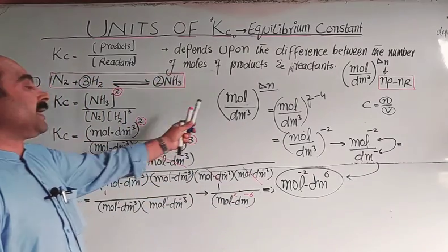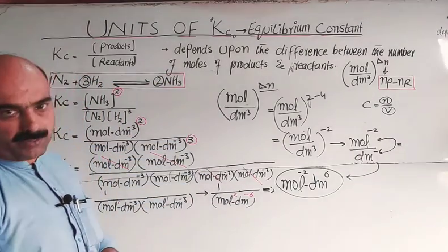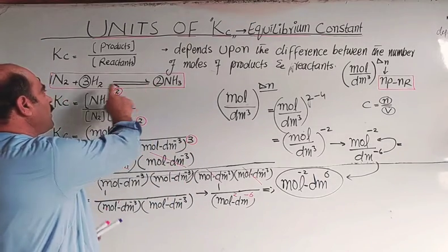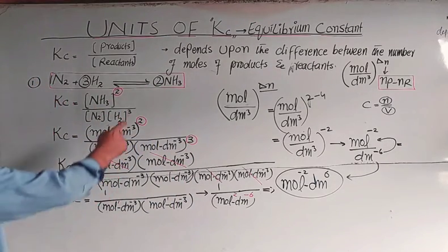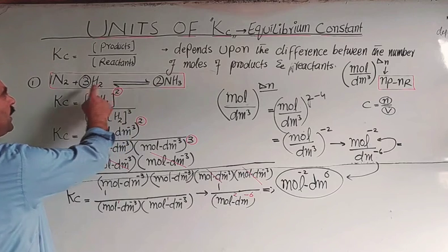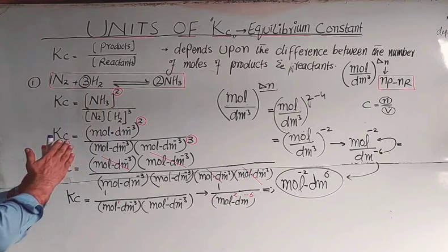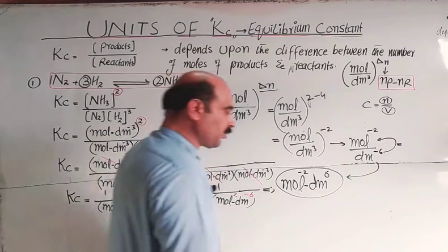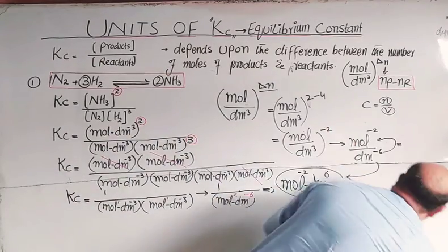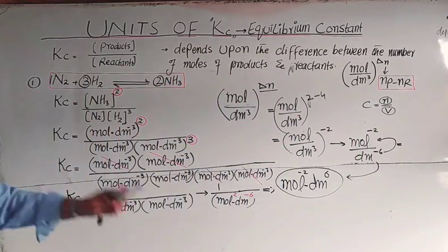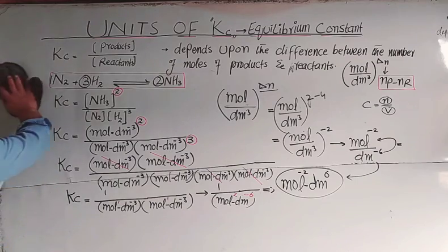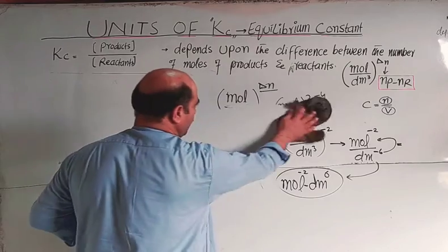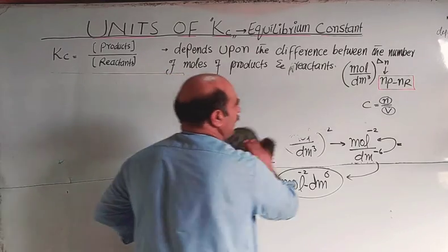This is a simple and important trick, especially for MCQs. When the number of moles of products and reactants are equal, Kc has no unit because the ratio cancels. Remember this trick — let's revise with another example using the simple method.